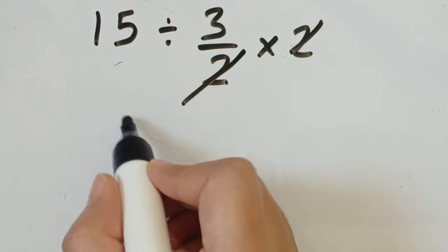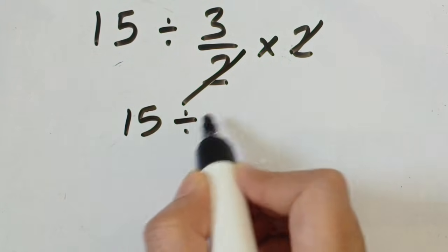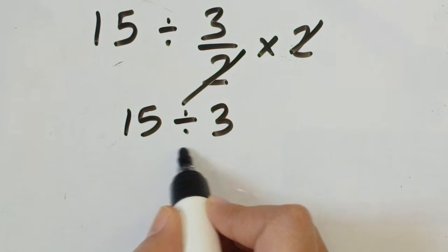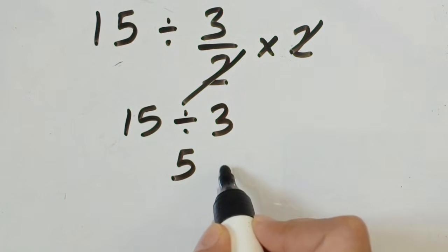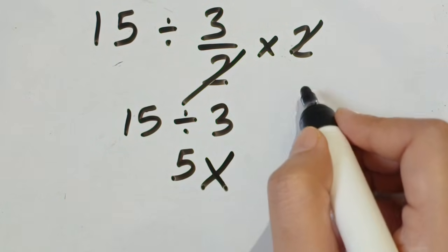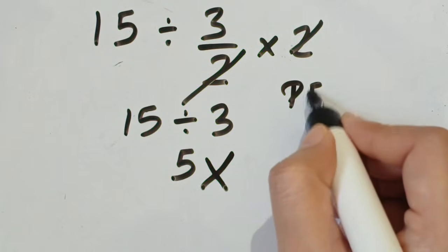Cancel this 2 with 2. So here we get 15 divided by 3, which gives us 5. But this is the wrong value according to the order of operations.